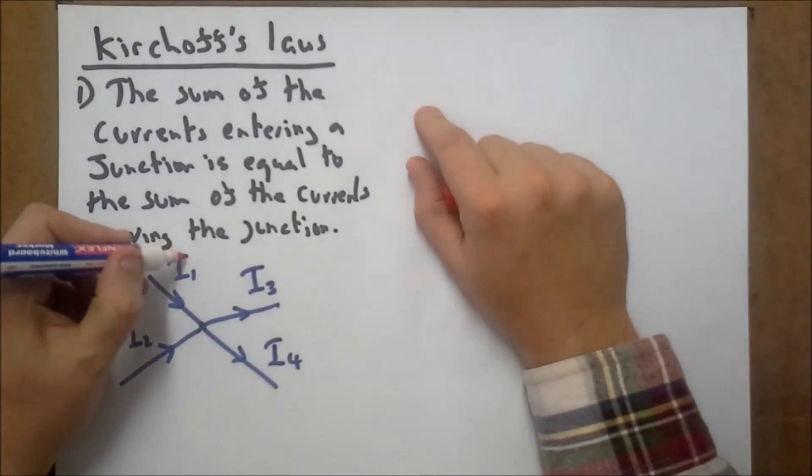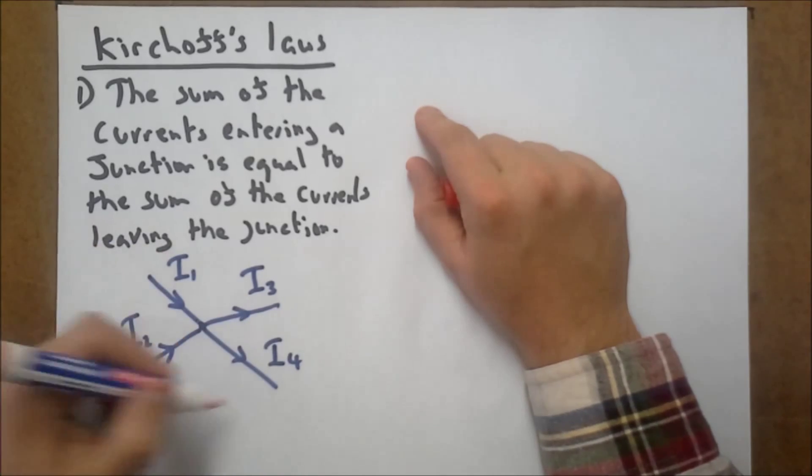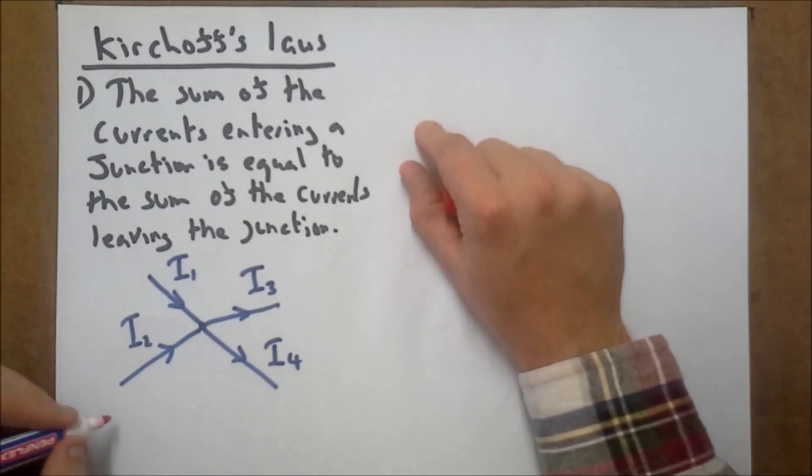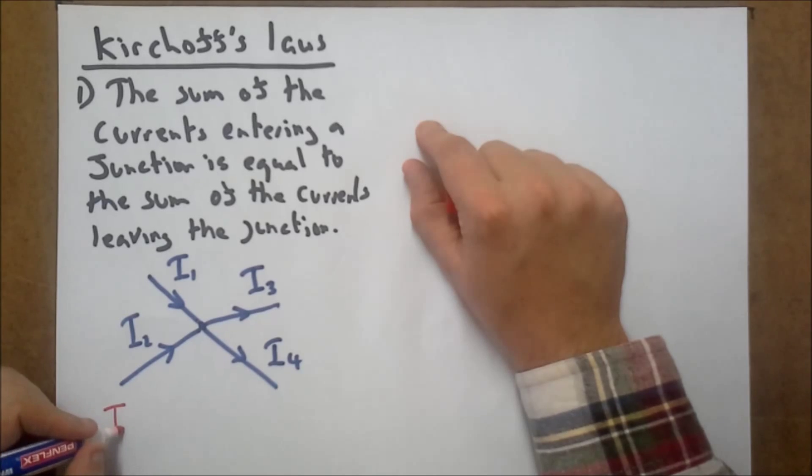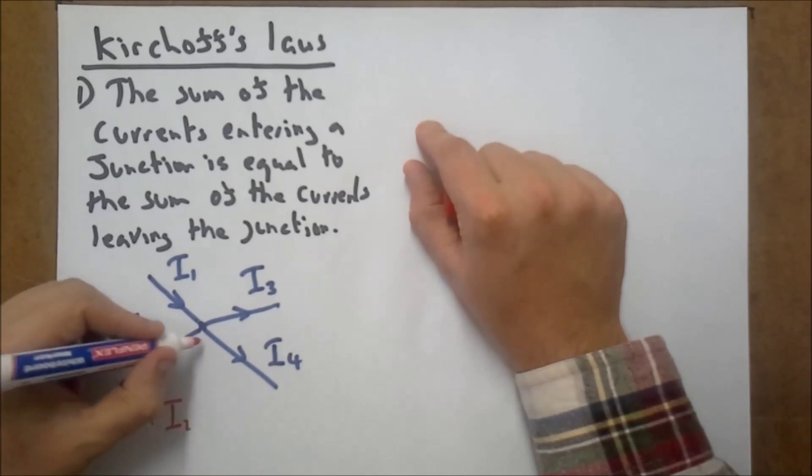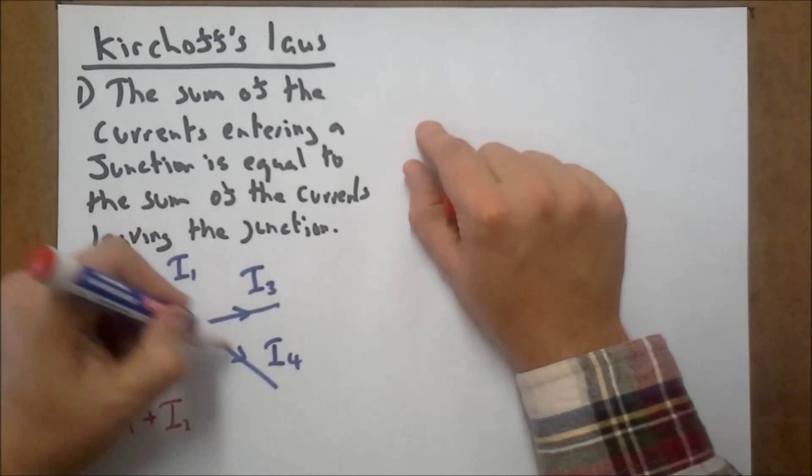The sum of the currents going in must equal the sum of the currents going out. So we can say mathematically, I1 plus I2 must equal the sum of the currents going out,